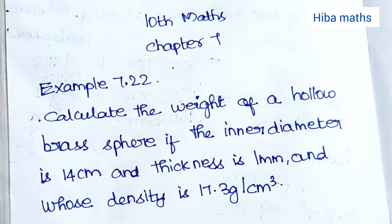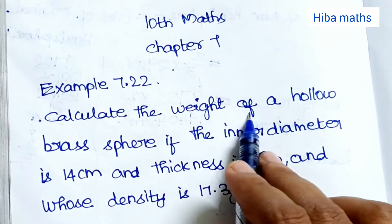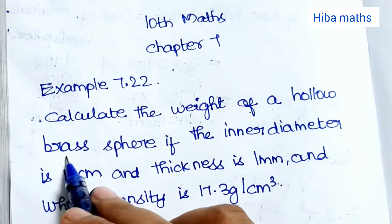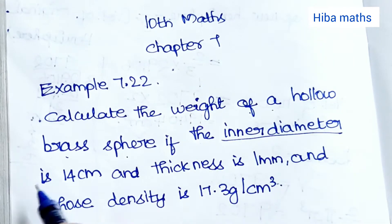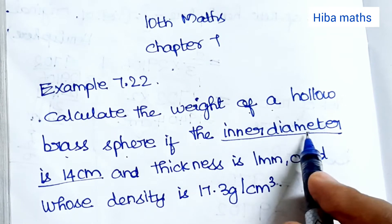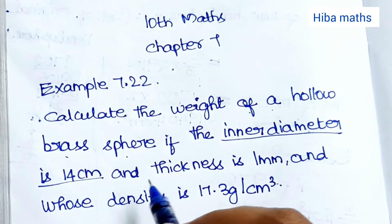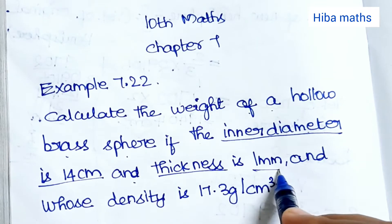Hello students, welcome to Hiba Max 10 Standard Max Chapter 7 Example 7.22. Calculate the weight of a hollow brass sphere if the inner diameter is 14 cm and the thickness is 1 mm.